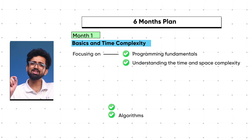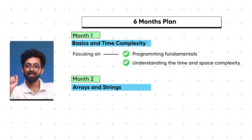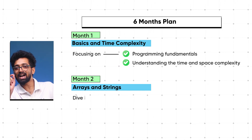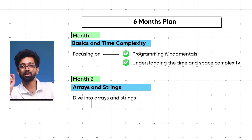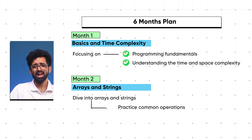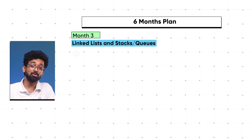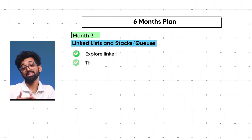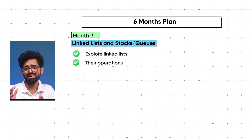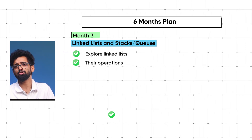In month two, dive into arrays and strings — practice common operations and algorithms, allocating two weeks for arrays and two weeks for strings. In month three, explore linked lists and their operations, then learn about stacks and queues — spend two weeks on linked lists and another two weeks on stacks and queues.